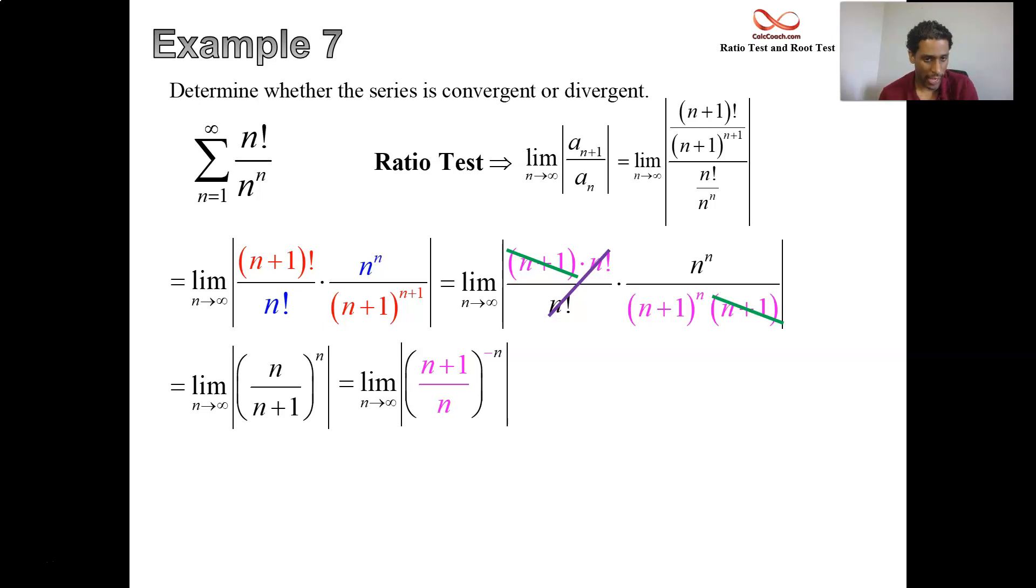Why would we want to do that? Well, what it allows us to be able to do is have one term in the denominator and multiple terms in the numerator. And what that'll allow us to do is break it up. n divided by n plus 1 divided by n, so 1 plus 1 over n. And that whole thing is raised to the negative n. Hopefully it looks a little bit more familiar.